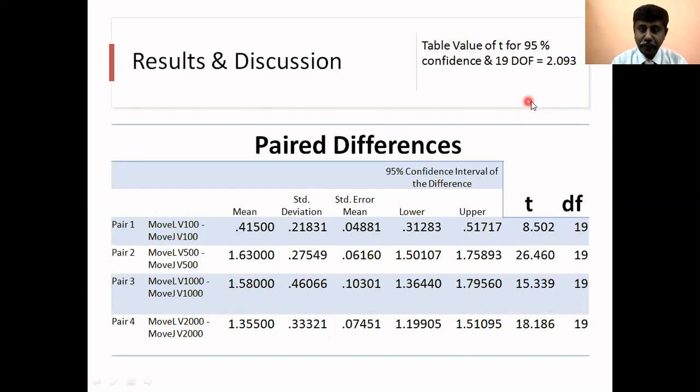The table value for this reading - totally I had 20 readings, so for 19 degrees of freedom and 95% confidence, the table value of t is 2.093. But the actual calculated values, all these values are greater than the table value, showing that there is a remarkable difference. When you change the programming method the servo drives get a little amount of heat. So that is what I conclude in this one.